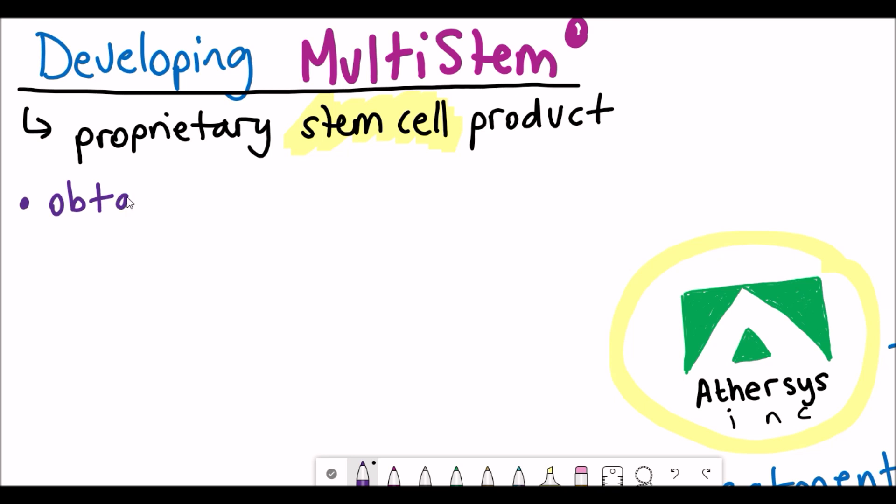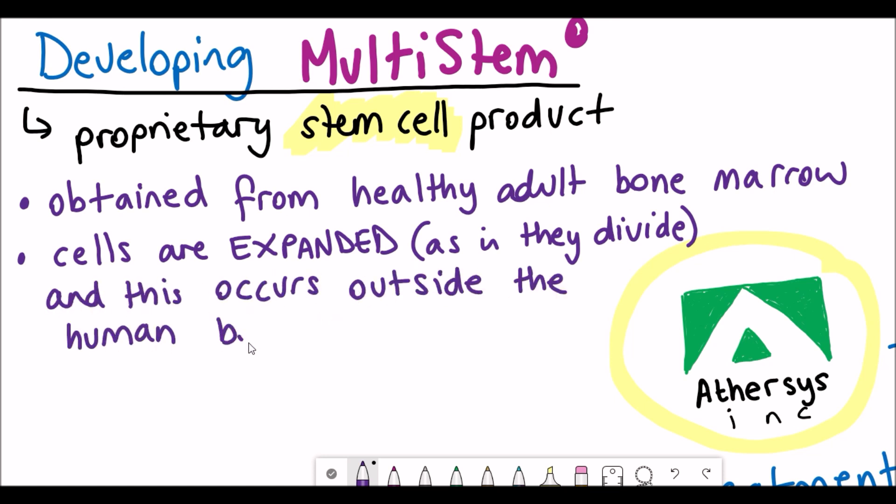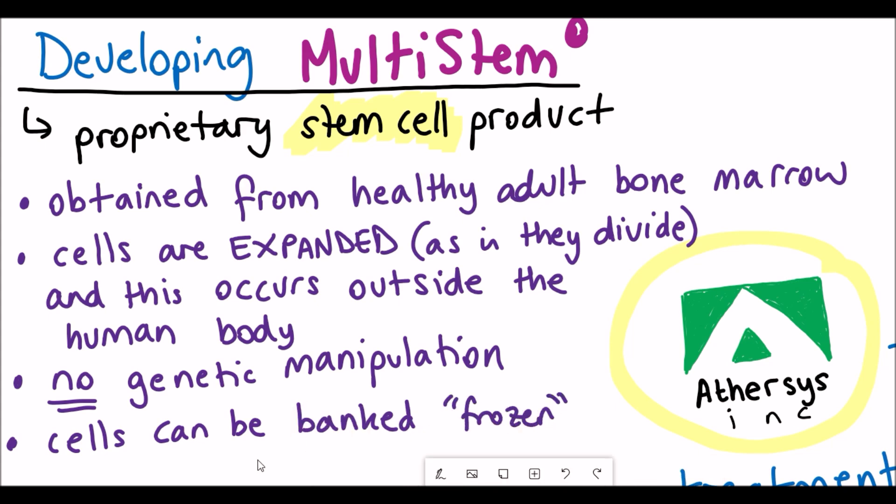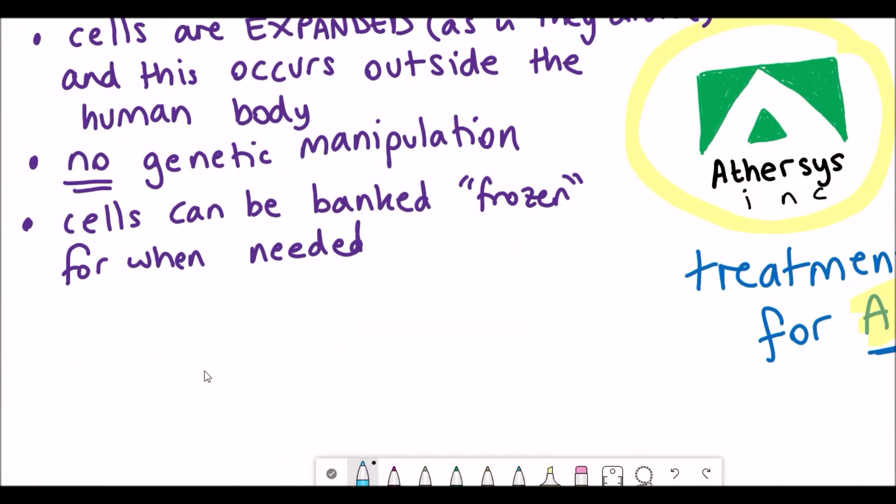Stem cells are cells that have the capability to regenerate and generate more cells, but also the ability to divide and differentiate. They initially took these cells from healthy adult bone marrow, and because they can divide, they can expand them outside the human body and produce more. There's no genetic manipulation, but these expanded cells can be frozen and thawed for when they're needed in therapies.